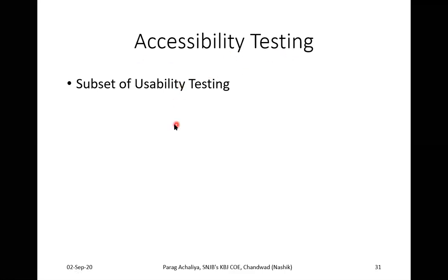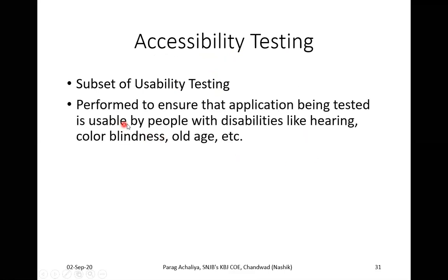In the same way, accessibility testing is a subset of usability testing. This means the user is directly involved in accessibility testing. It is performed to ensure that the application being tested is usable by people with disabilities like hearing impairment, color blindness, old age, etc. The users for accessibility testing are special users who have some disabilities — they cannot hear, they have color blindness, or they are elderly people.